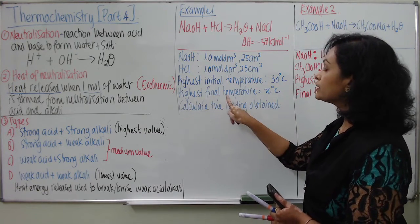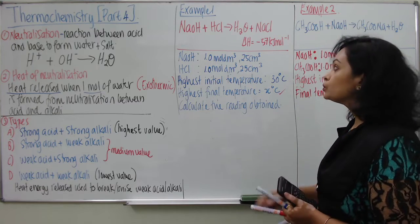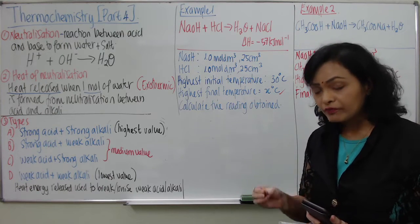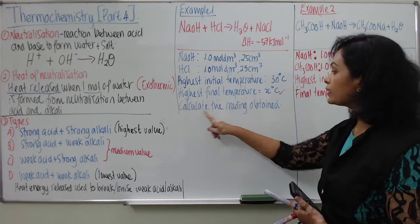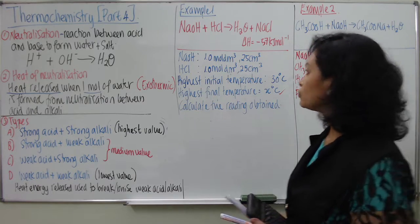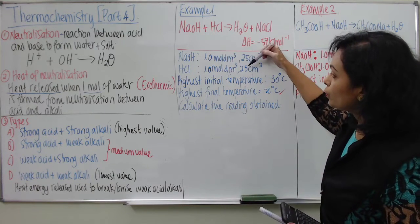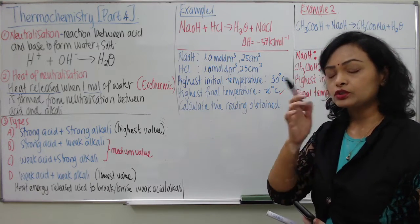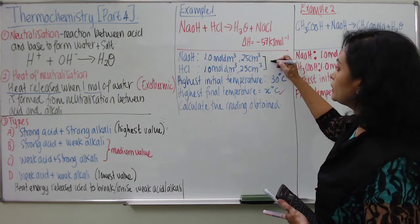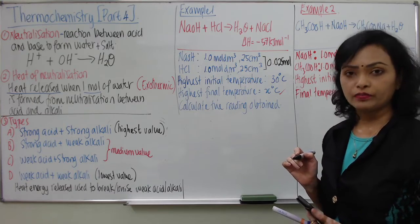The highest point of temperature is what you are going to find now. Using all this information, you are going to find the final temperature reading for this reaction — calculate the reading of the thermometer, which is the final reading. So your first step: you can see 1.0 mol/dm³, 25 cm³ of NaOH and 1.0 mol/dm³, 25 cm³ of HCl. This is not going to produce a problem because the amount of moles for both substances is going to be 0.025 mol.